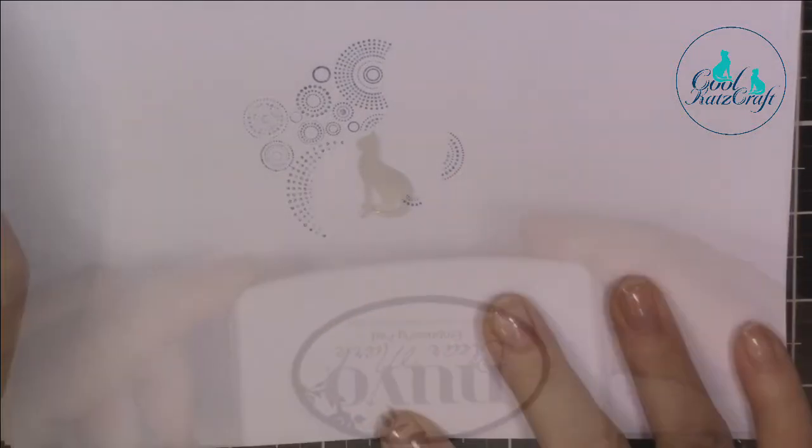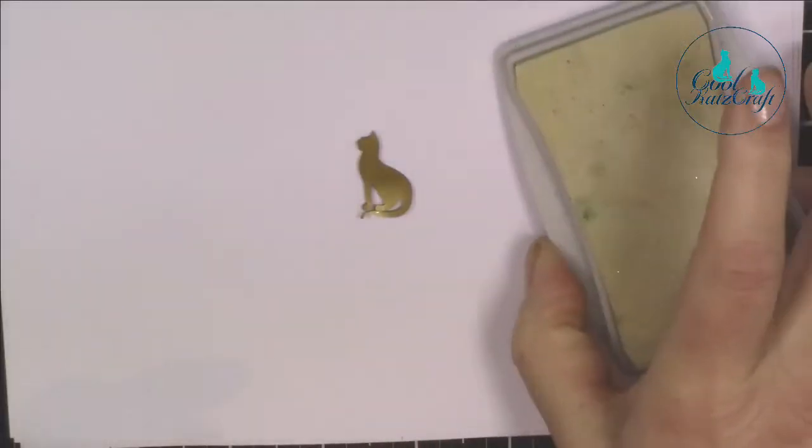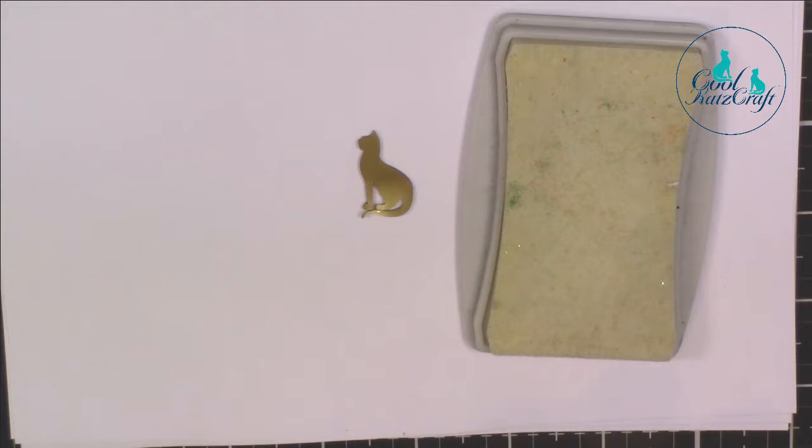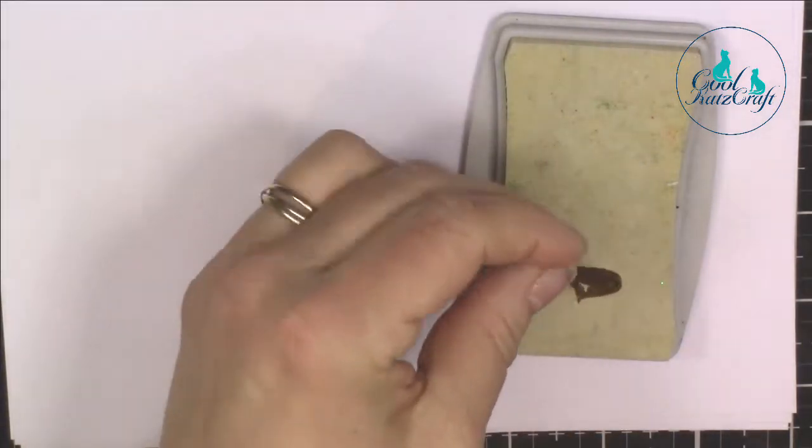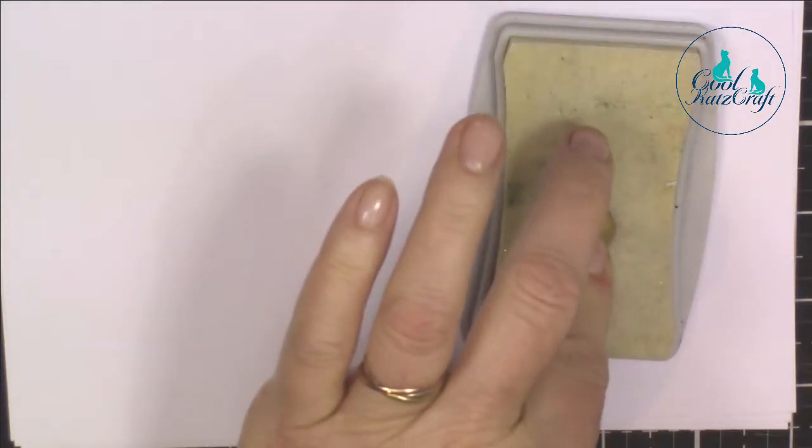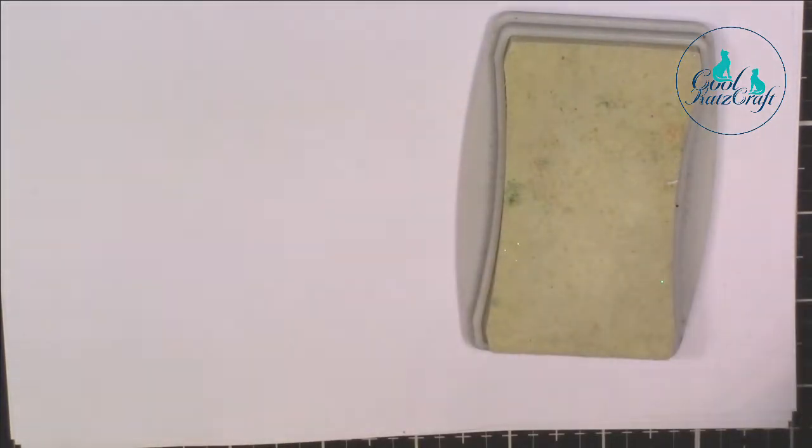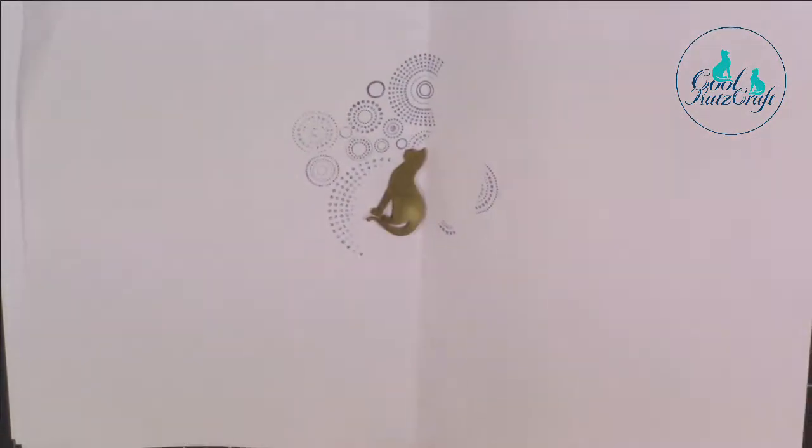We have our shrunken cat and I'm now going to cover it with embossing powder. I'm using Stampendous aged black embossing enamel with embossing ink so that the enamel sticks to it and covering the cat with the embossing powder.